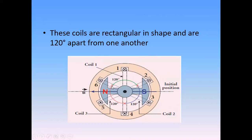You can see here: the angle between coil one and coil two is 120 degrees, between coil two and coil three is 120 degrees. You can see a green line, blue line, and a red line. So the coils are rectangular in shape and they are set apart by 120 degrees.